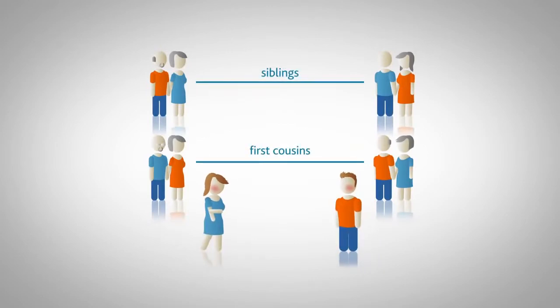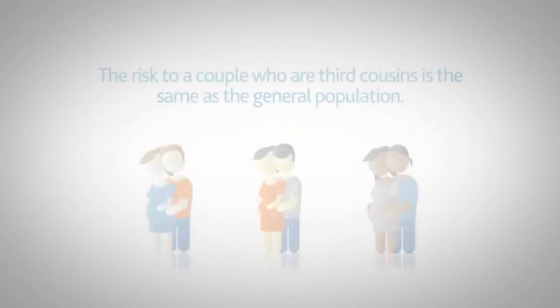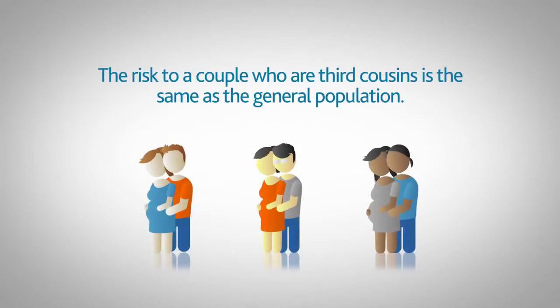In the next example, Anne and John are second cousins. The risk in a second cousin relationship is 3%. The risk to a couple who are third cousins is the same as the general population.